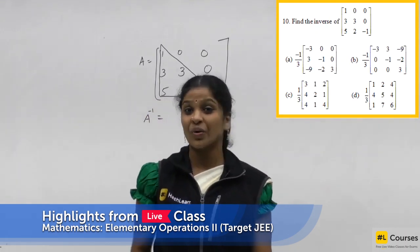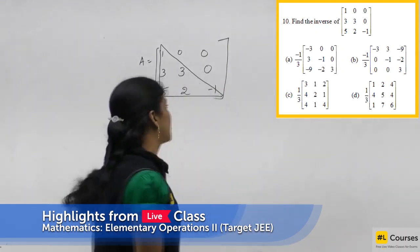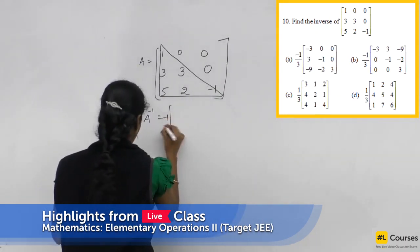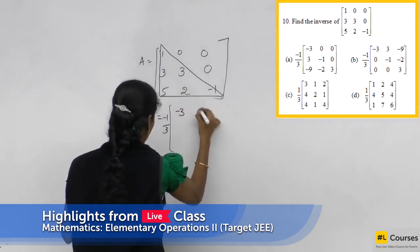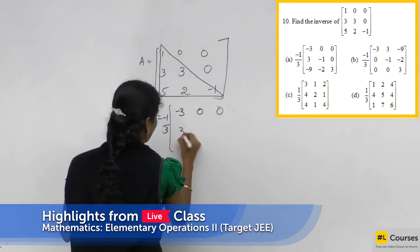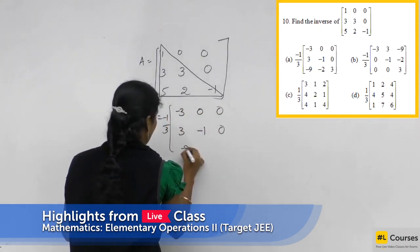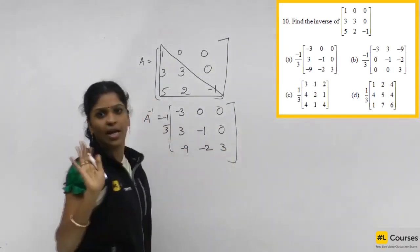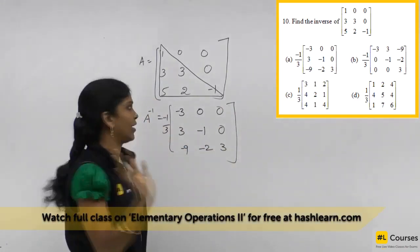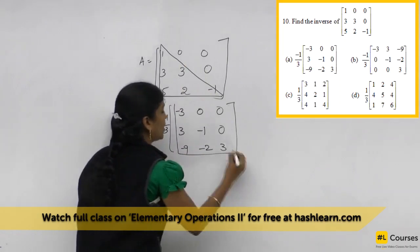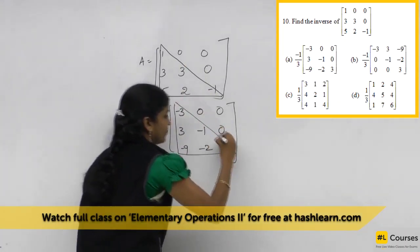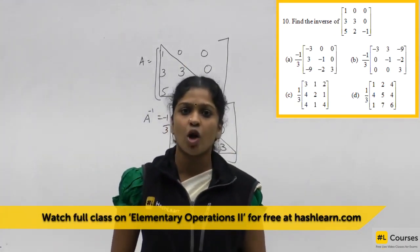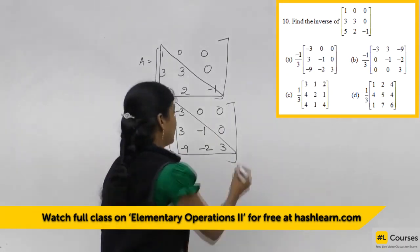Now see the options. Take the first option — what is the first option given? It is minus 1/3, minus 3, 0, 0, 3, minus 1, 0, minus 9, minus 2, 3. Nothing is there to calculate — it is a lower triangular matrix. This is also a lower triangular matrix. Which option is correct? Option A.